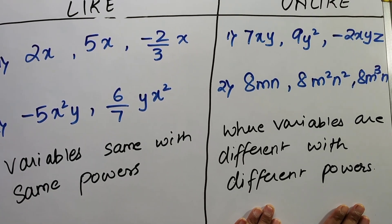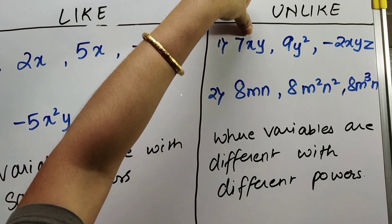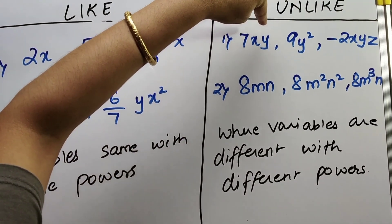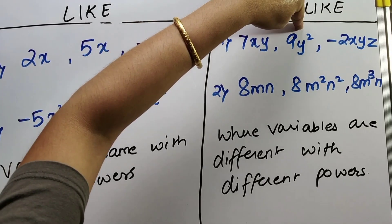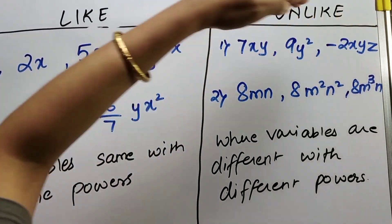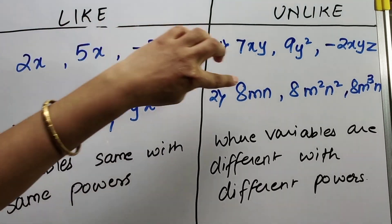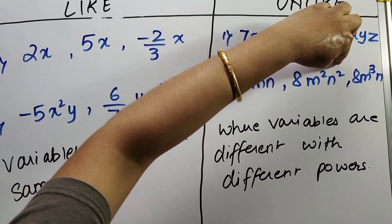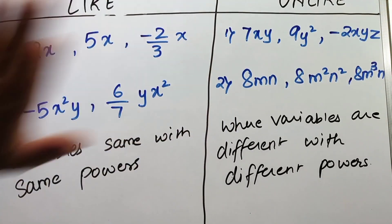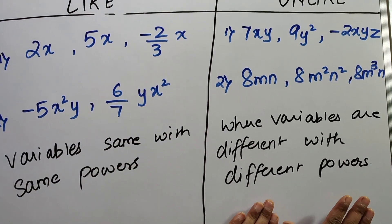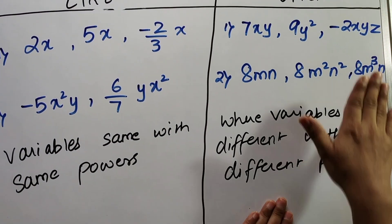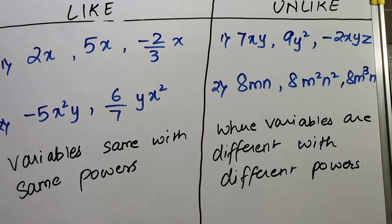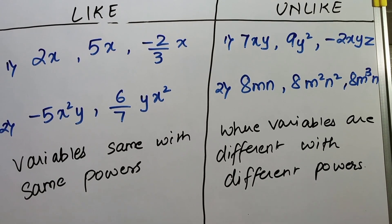What are unlike terms? Unlike terms are where the variables are different. As you can see in this example, the variables are x, y, y square, x, y, z — all the variables are different. In another example, the powers are also different: m square, n square, m cube, n. So where the variables are different and the powers are different, they are unlike terms.